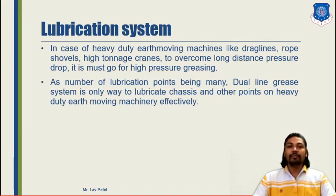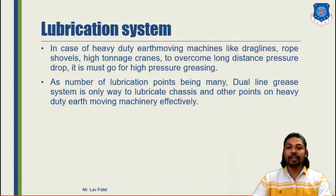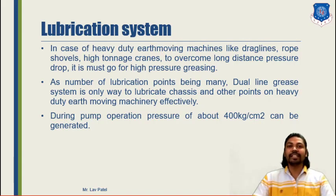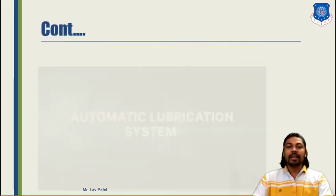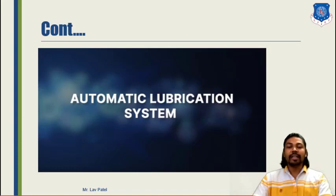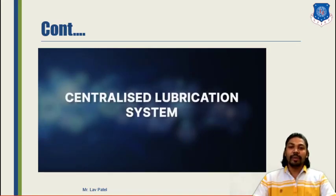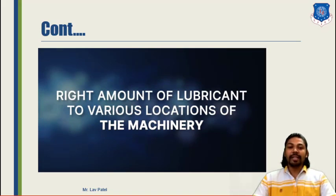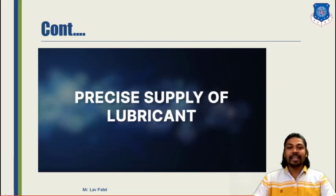In a dual-line grease system, we have two different lines through which lubrication runs to different points on heavy-duty earth-moving machineries. During pump operation, pressure is about 400 kg per centimeter square, so it can easily reach from one place to another across the entire special purpose vehicle. Now let us see about the different kinds of lubrication systems used in special purpose vehicles. First, let us begin with the automatic lubrication system, in which lubrication is done automatically — also called a centralized lubrication system — from which the right amount of lubricant is delivered as required.